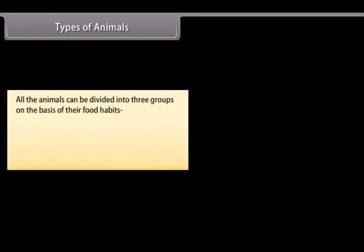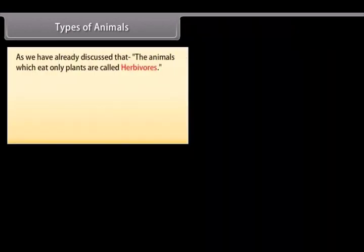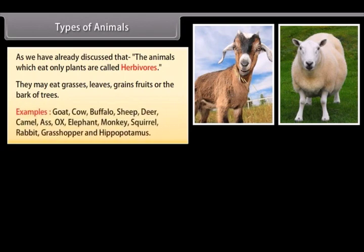All animals can be divided into three groups on the basis of their food habits: herbivorous, carnivorous, and omnivorous. Animals which eat only plants are called herbivorous. They may eat grasses, leaves, grains, fruits or the bark of trees. Examples include goat, cow, buffalo, sheep, deer, camel, ass, ox, elephant, monkey, squirrel, rabbit, grasshopper and hippopotamus.